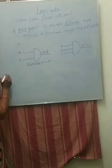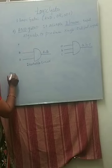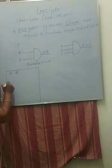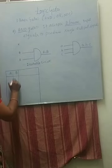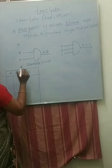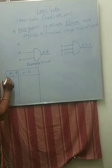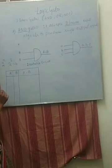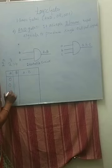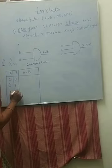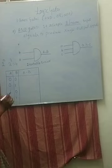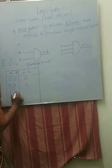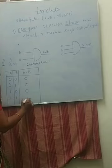For a two-variable AND gate, using the general formula 2 to the power N: 2² gives four possible input combinations. The inputs for A are 0, 0, 1, 1, and for B: 0, 1, 0, 1. Applying multiplication: 0·0=0, 0·1=0, 1·0=0, 1·1=1.